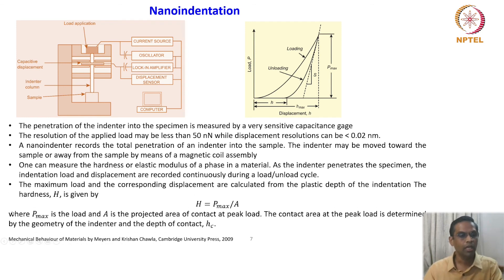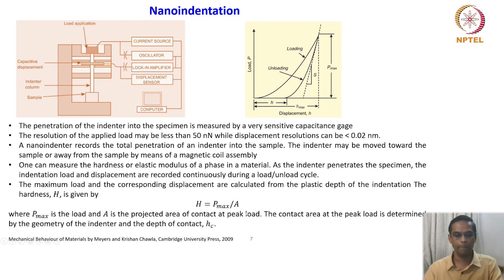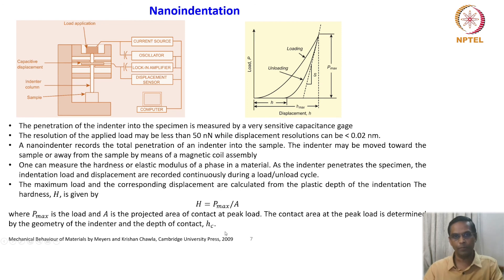As the indenter penetrates a specimen, the indentation load and displacement are recorded continuously during a load-unload cycle. What is plotted is a loading and unloading cycle: the load increases, reaches a maximum Pmax, then unloading takes place. The net penetration depth is h and the maximum penetration depth is h_max. The stiffness S can be measured as dp/dh — the slope — which gives the stiffness of the phase. This hardness tester uses very small loads and can sense very small displacements in the sub-micron scale, allowing measurement of mechanical strength of tiny sub-micron entities in the microstructure.